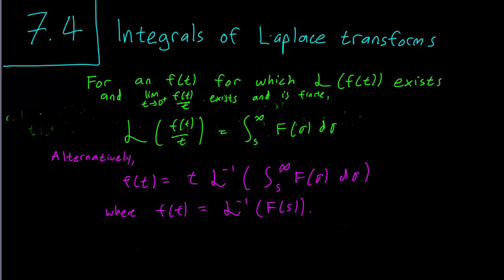So if we have an f for which the Laplace transform exists, and we have the condition that ft over t exists and is finite, then we know that the integral of the Laplace transform is given by taking the original function and dividing it by t. Notice that just as the differentiation formula involves multiplication by t, integration involves dividing by t, because differentiation and integration are inverse operations.